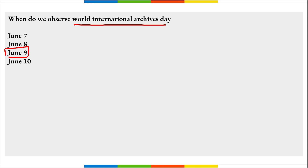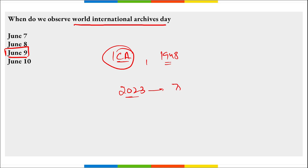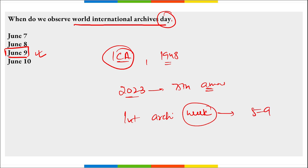International Archives Day — when do we observe this? It is on 9th of June. This day is observed to raise awareness about the importance of archives and to promote the protection and free access to archives. This day also marks the foundation of the ICA — International Council of Archives — established in 1948. In 2023 it was the 75th anniversary of the ICA. If we are talking about International Archive Week, it is observed from 5th to 9th of June.